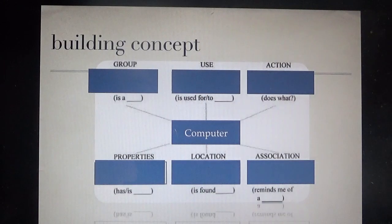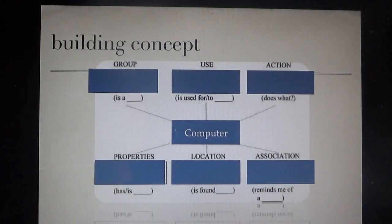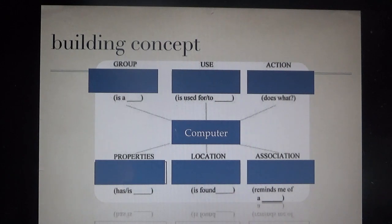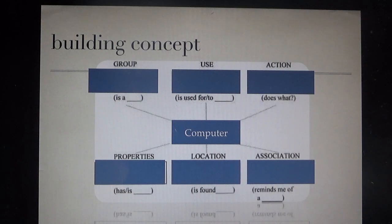In building the concept, you put the word in the middle and then find the group, use, action, properties, location, and association of that word. For example: the group — a computer is an electronic device. What is it used for? It is used for gathering information and writing information. The action — what does a computer do? It makes our writing activity easier.